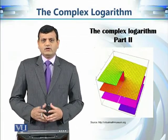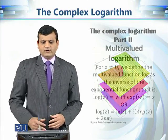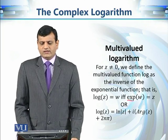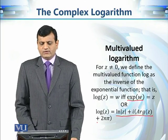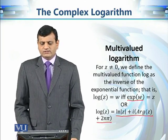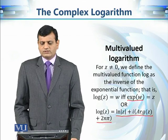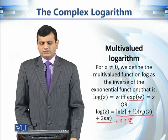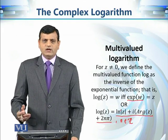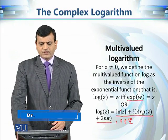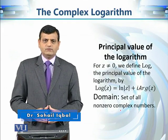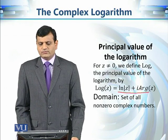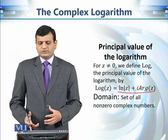This is the second part of our discussion on the complex logarithm function. So far we have defined the multivalued logarithm function — it is the inverse of the exponential function. The value is log(z) = ln|z| + i·(Arg(z) + 2nπ), where n varies over all integers, giving infinitely many outputs. We also defined the associated principal value, which is a single-valued function obtained by taking n = 0.